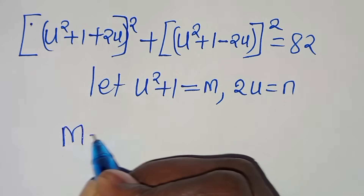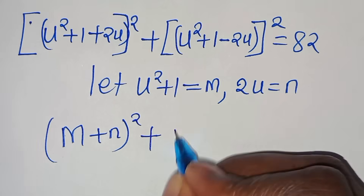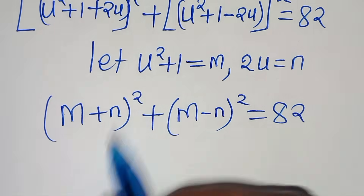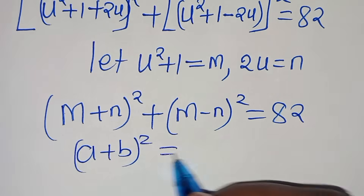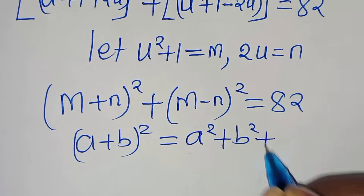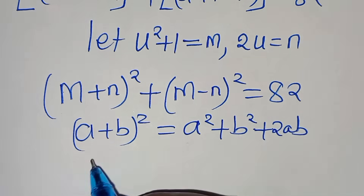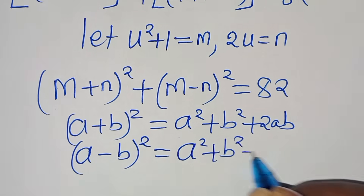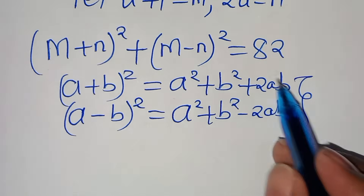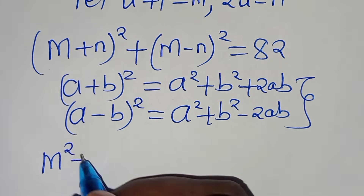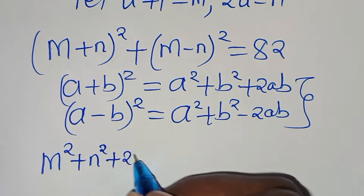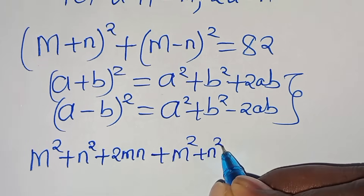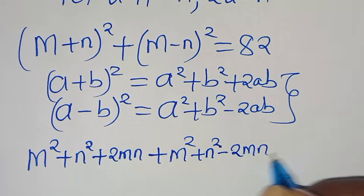We expand using the identities: (m + n)² = m² + n² + 2mn, and (m − n)² = m² + n² − 2mn. Applying both gives m² + n² + 2mn plus m² + n² − 2mn, equal to 82.